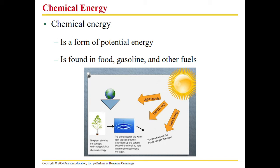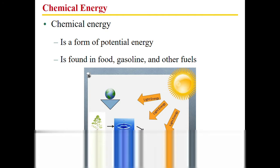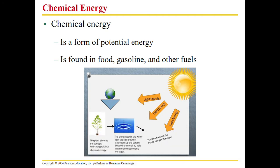Chemical energy is one form of potential energy. We store energy in bonds — we're not using them at the moment, but when we break those bonds we release that stored energy. This is how plants and animals work. Plants do this through photosynthesis, converting sun energy to chemical energy. Animals do this via cellular respiration.